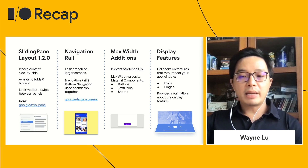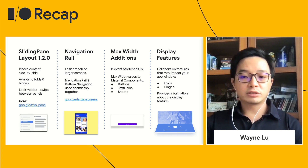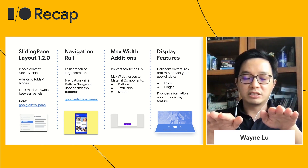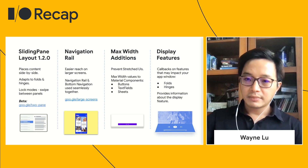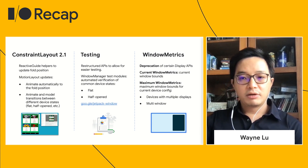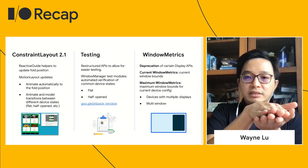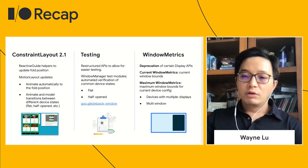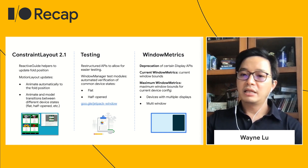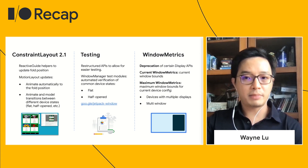You can now use the Window Manager library to detect and obtain information on display features such as folds and hinges. Folds are defined as one continuous screen that can bend, while hinges separate two display areas, splitting the screen in half. With ConstraintLayout and MotionLayout, you can easily simulate different states — flat, half-open, and closed — and animate the transitions between them. With reactive guide helpers, you can inject different fold positions in your layout. We have also built a testing module inside Window Manager to help you write automated tests.